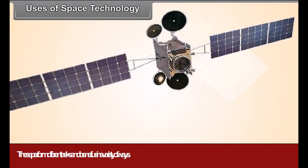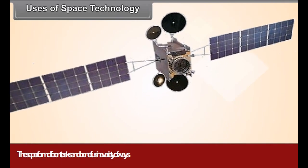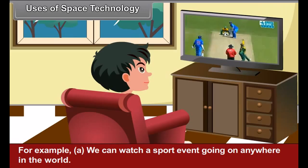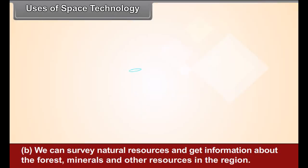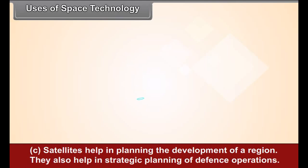These satellites perform different tasks and benefit us in a variety of ways. For example: A. We can watch a sports event going on anywhere in the world. B. We can survey natural resources and get information about the forests, minerals, and other resources in a region. C. Satellites help in planning the development of a region and also help in the strategic planning of defense operations.